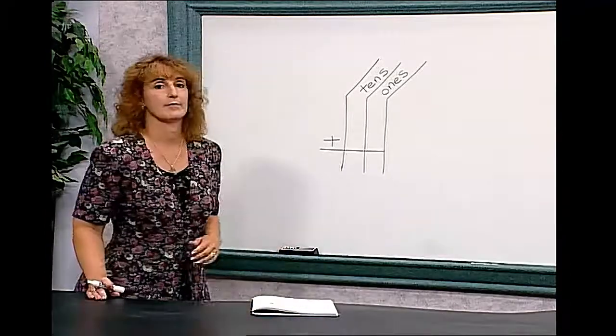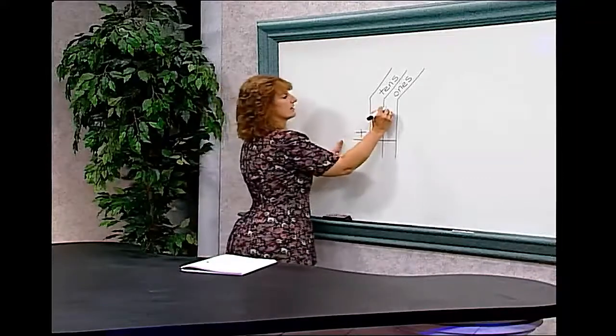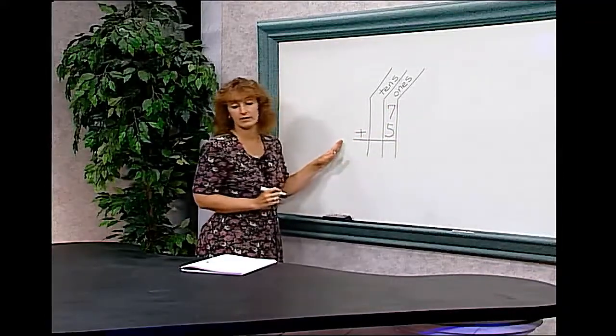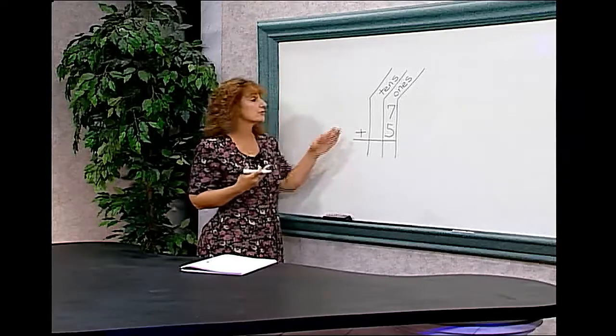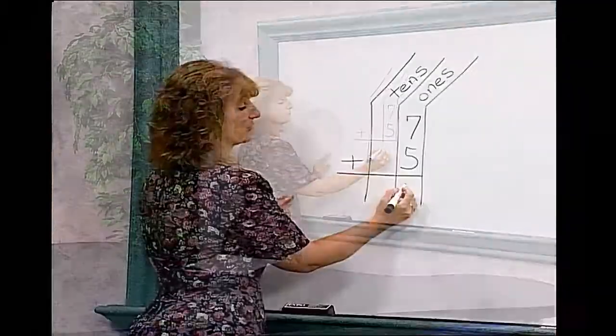Our first step is to write each number in its proper column. Seven plus five. We have to add these two numbers together. Seven plus five equals twelve.